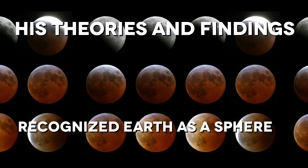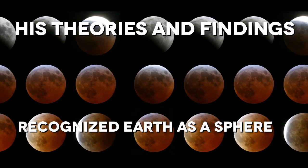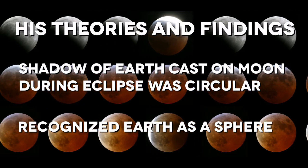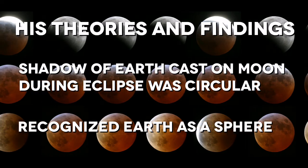He was the first to recognize that the earth was spherical in form. He was able to deduce this by noticing the shadow cast by the earth on the moon during an eclipse.